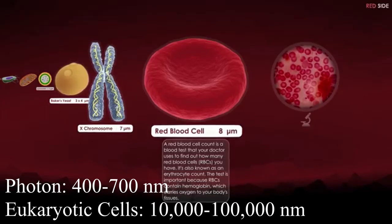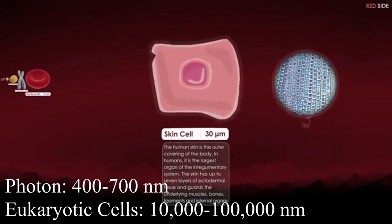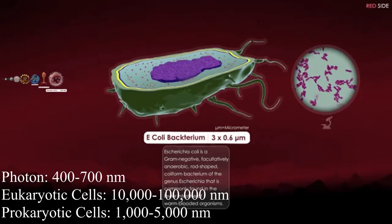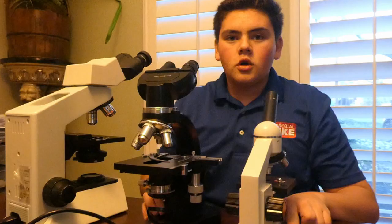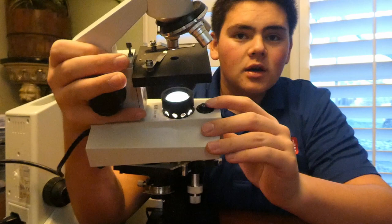Common eukaryotic cells are around 10,000 to 100,000 nanometers. Similarly, prokaryotic cells are around 1,000 to 5,000 nanometers. These sizes are significantly larger than the average size of a light photon, so a light microscope is a viable option to see significant detail at this size. Each light microscope requires a way for light to be passed through a specimen, which would be placed right here, with light shining through this hole into the lens and into the person's eye.